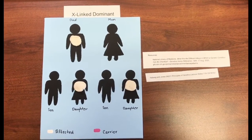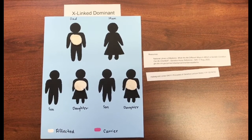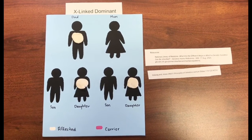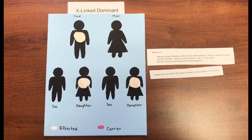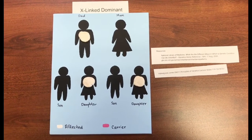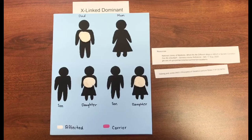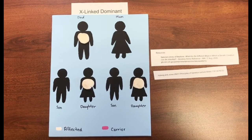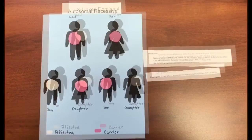Another example is X-linked dominant, in which usually more females are affected. It does not skip generations, and fathers with the trait will pass it on to their daughters. An example is Fragile X syndrome. In this situation, the father has the disease, so both of his daughters will have it as well.